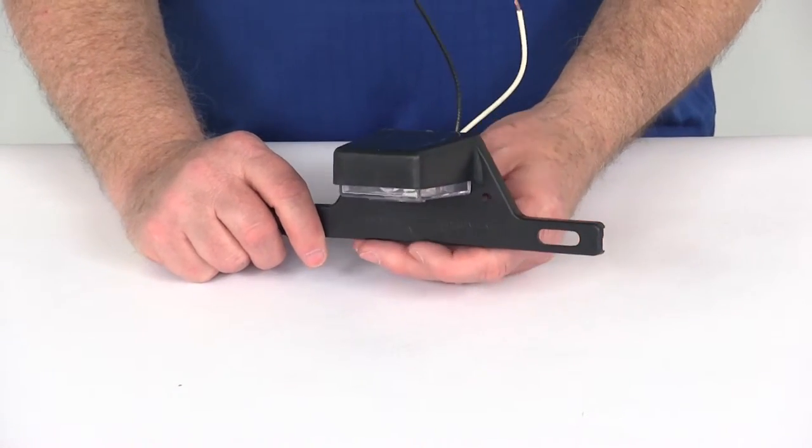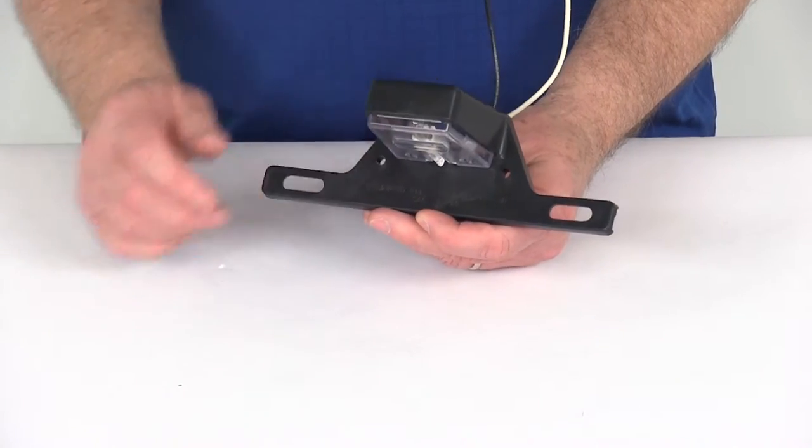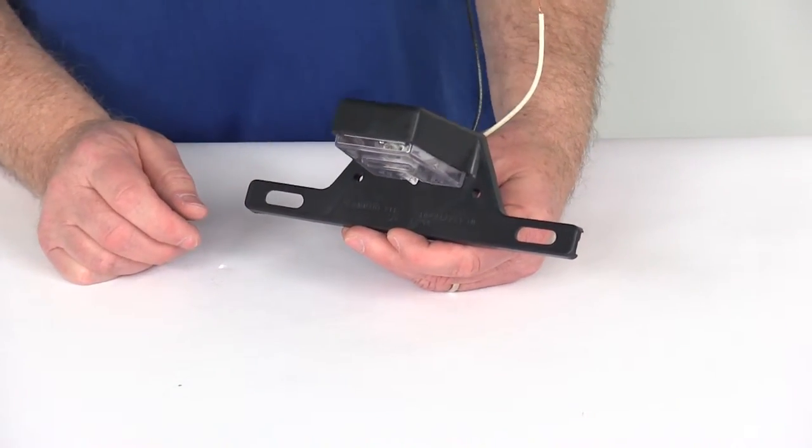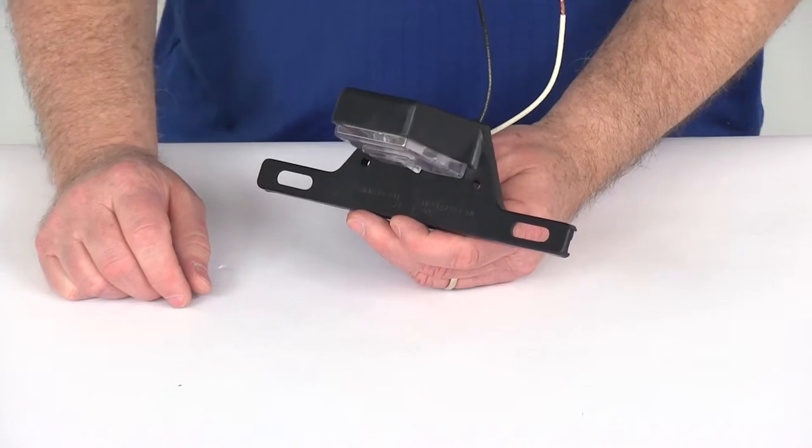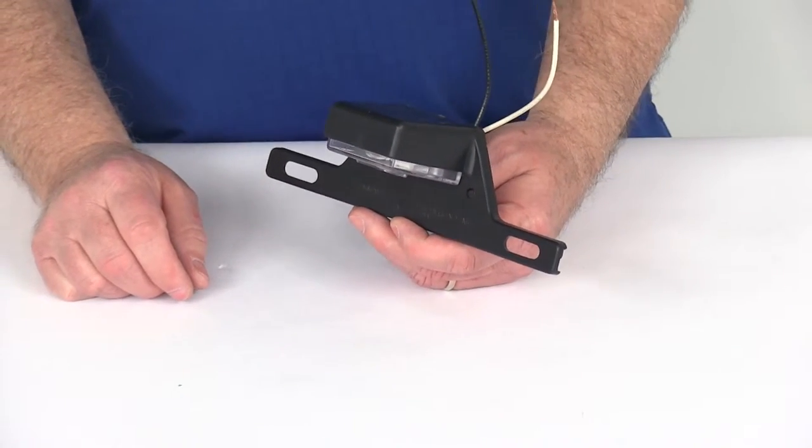Now this part will replace one license plate bracket and light for the Thule Terrapin hitch-mounted cargo carrier. It installs directly in front of the Terrapin shell using existing hardware.